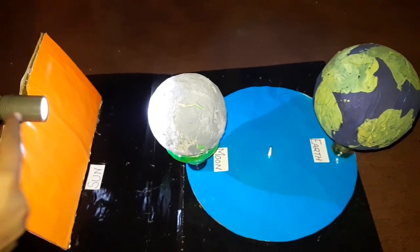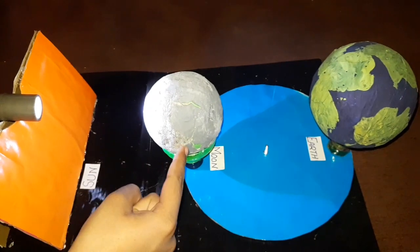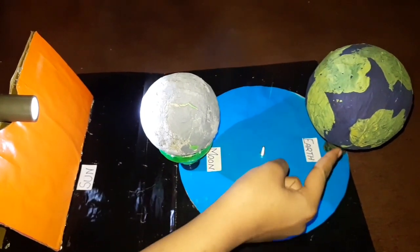As you can see, this is the torch representing sun, this is moon and this is the model of earth.